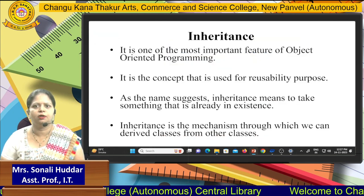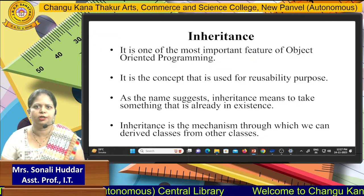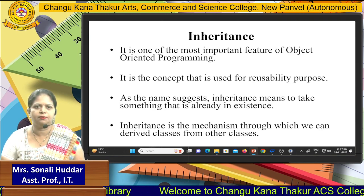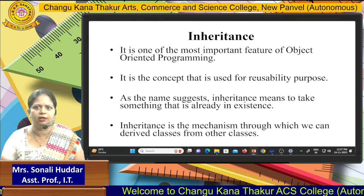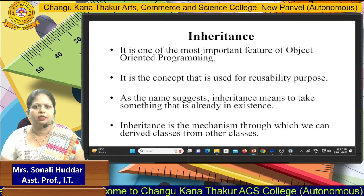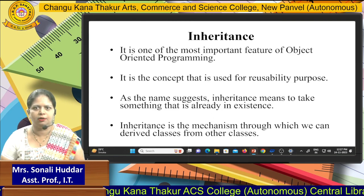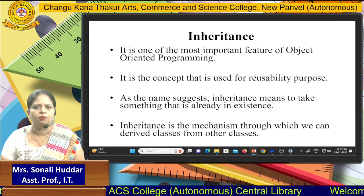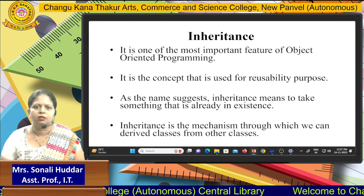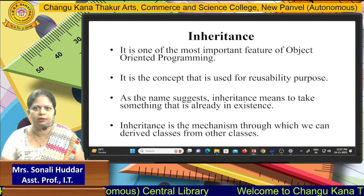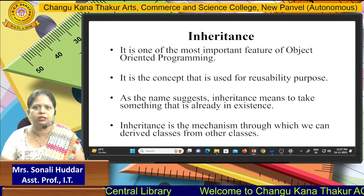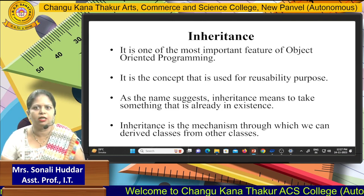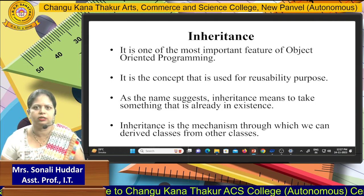Inheritance is one of the most important features of object-oriented programming. If you are considering C++ or Java, these are object-oriented languages, and inheritance is one of their key features. It is a concept used for reusability — once you create something, you can use it again and again wherever it is needed, without creating that same thing repeatedly. As the name suggests, inheritance means to take something that is already in existence.